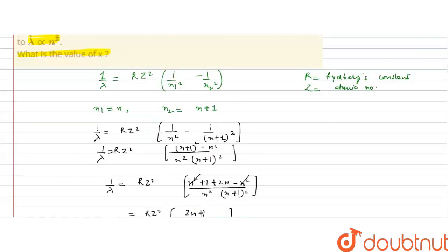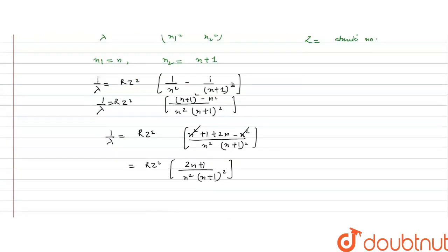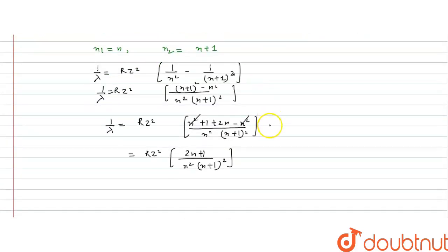Now, a condition is given in the question that n is greater greater than 1, so if n is greater greater than 1, it means 1 by n, it will approaches to 0, its value almost equals to 0.